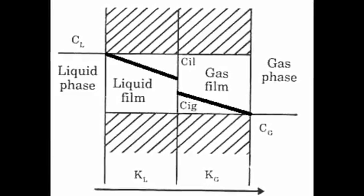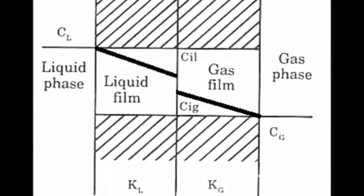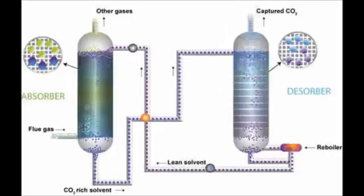In gas desorption or stripping, however, the mass transfer is in the opposite direction, that is, from the liquid phase to the gas phase. Here, two components of a liquid are separated by contact with the gas. The principles for both systems are the same.